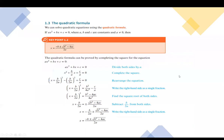Moving towards how to derive the quadratic formula. The derivation involves the general equation ax squared plus bx plus c equals to zero, which implies a does not equal to zero.